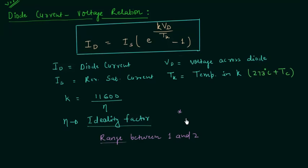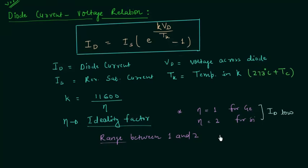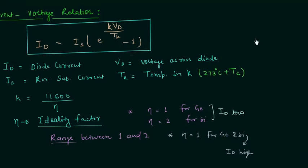The ideality factor Eta equals 1 for germanium and equals 2 for silicon. These values apply when the diode current Id is low. When the diode current is high, different values may apply. We will use these values in numerical problems. We can also modify this formula because we know that the thermal voltage Vt equals Tk divided by 11600, and from this we can see that k equals 11600 divided by Eta.